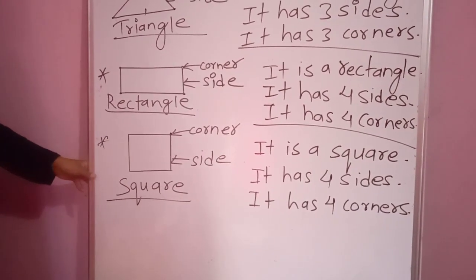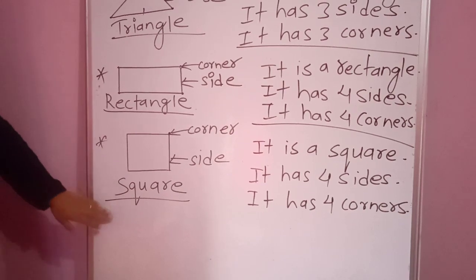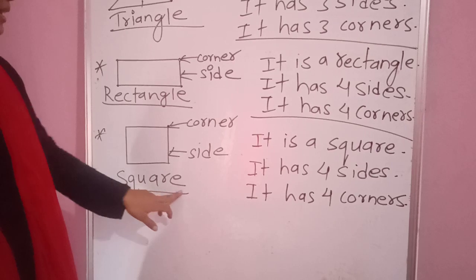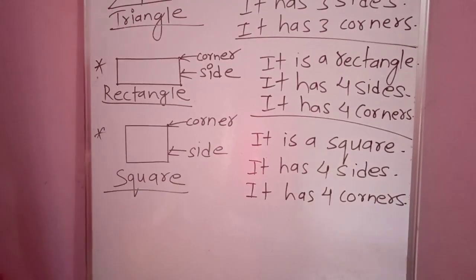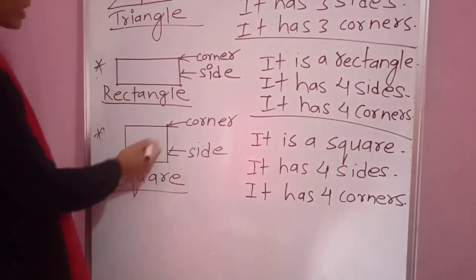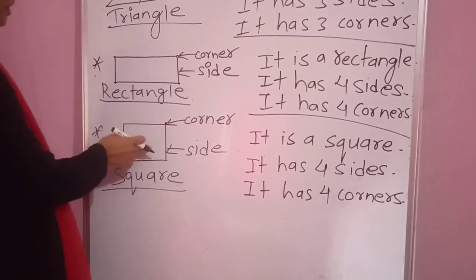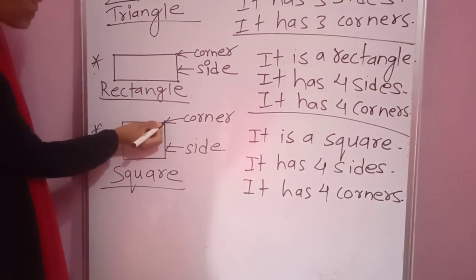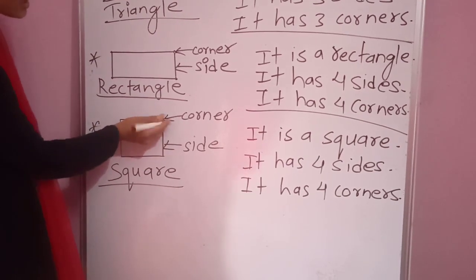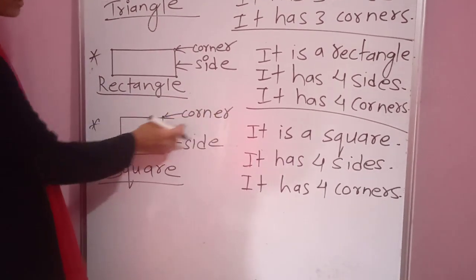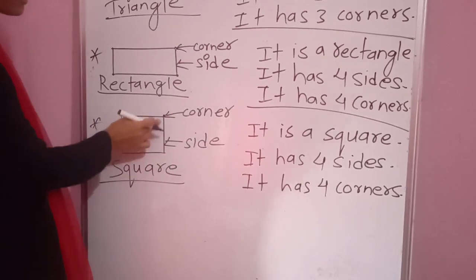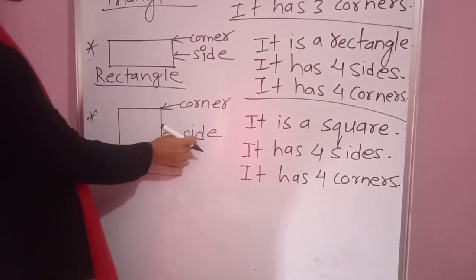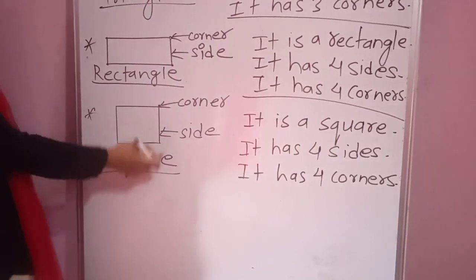Now I would like to introduce the third plane shape, and its name is square — S-Q-U-A-R-E. Here are its parts, which I have labeled in the figure. This is the point where these two lines meet, so this is called the corner. And this line, which I have labeled with the arrow, is called the side — the side of a square.